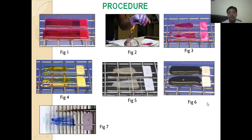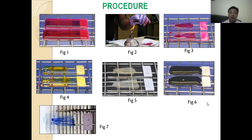In figure one, we have flooded the slides or smear with carbol fuchsin. In figure two, we heat-fix it. In figure three, we drain off the excess carbol fuchsin. In figure four, we decolorize with acid alcohol. Then we wait a few minutes, rinse again with distilled water, flood with counterstain, and in figure seven we can see the final stage of smear preparation.